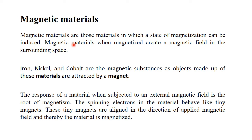The five categories are: paramagnetic, diamagnetic, ferromagnetic, ferrimagnetic, and anti-ferromagnetic. Few examples of magnetic materials are those whose permeability is high and positive — iron, nickel, and cobalt. These are the main magnetic substances, with high permeability, and they are attracted by magnets.